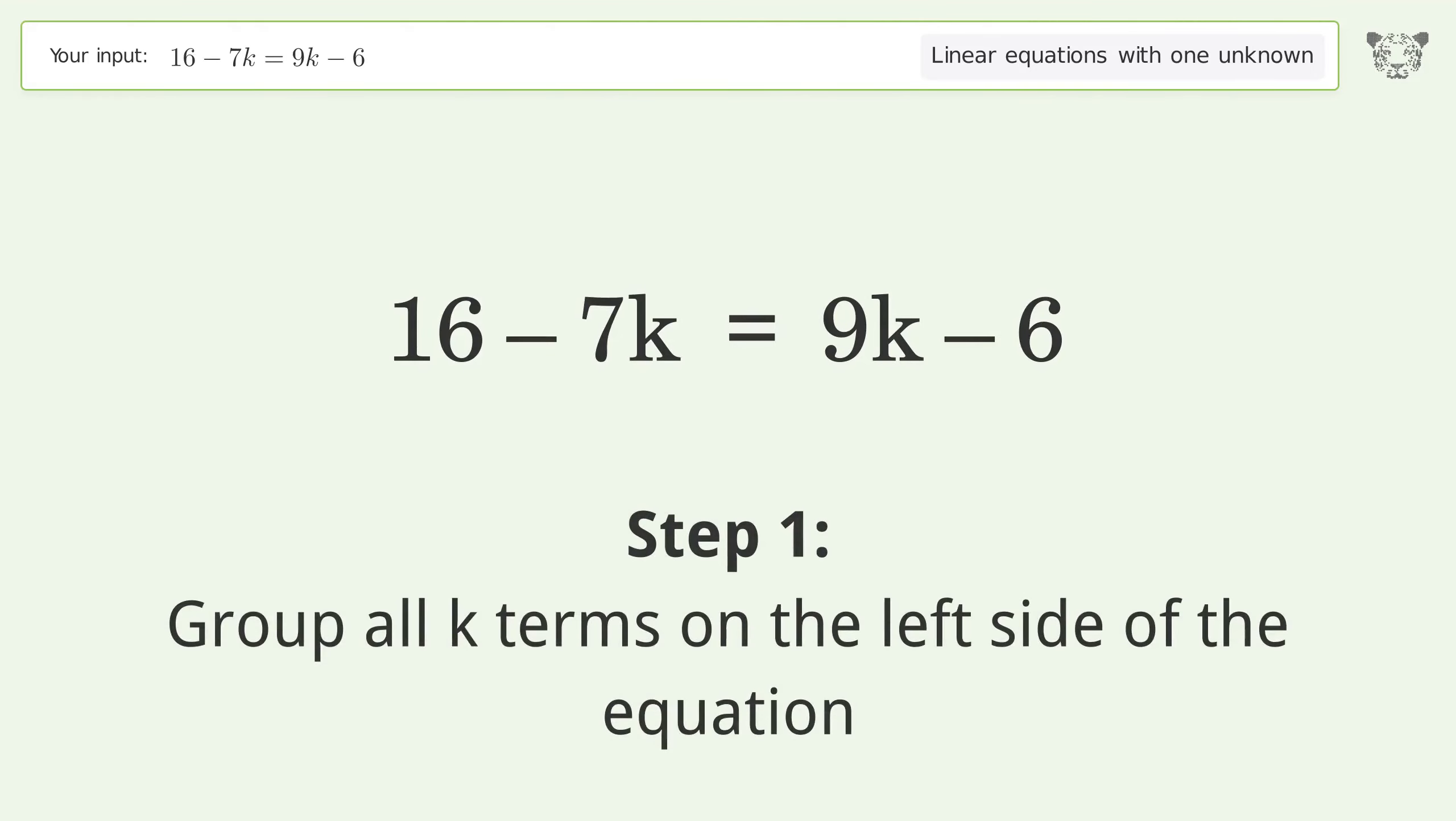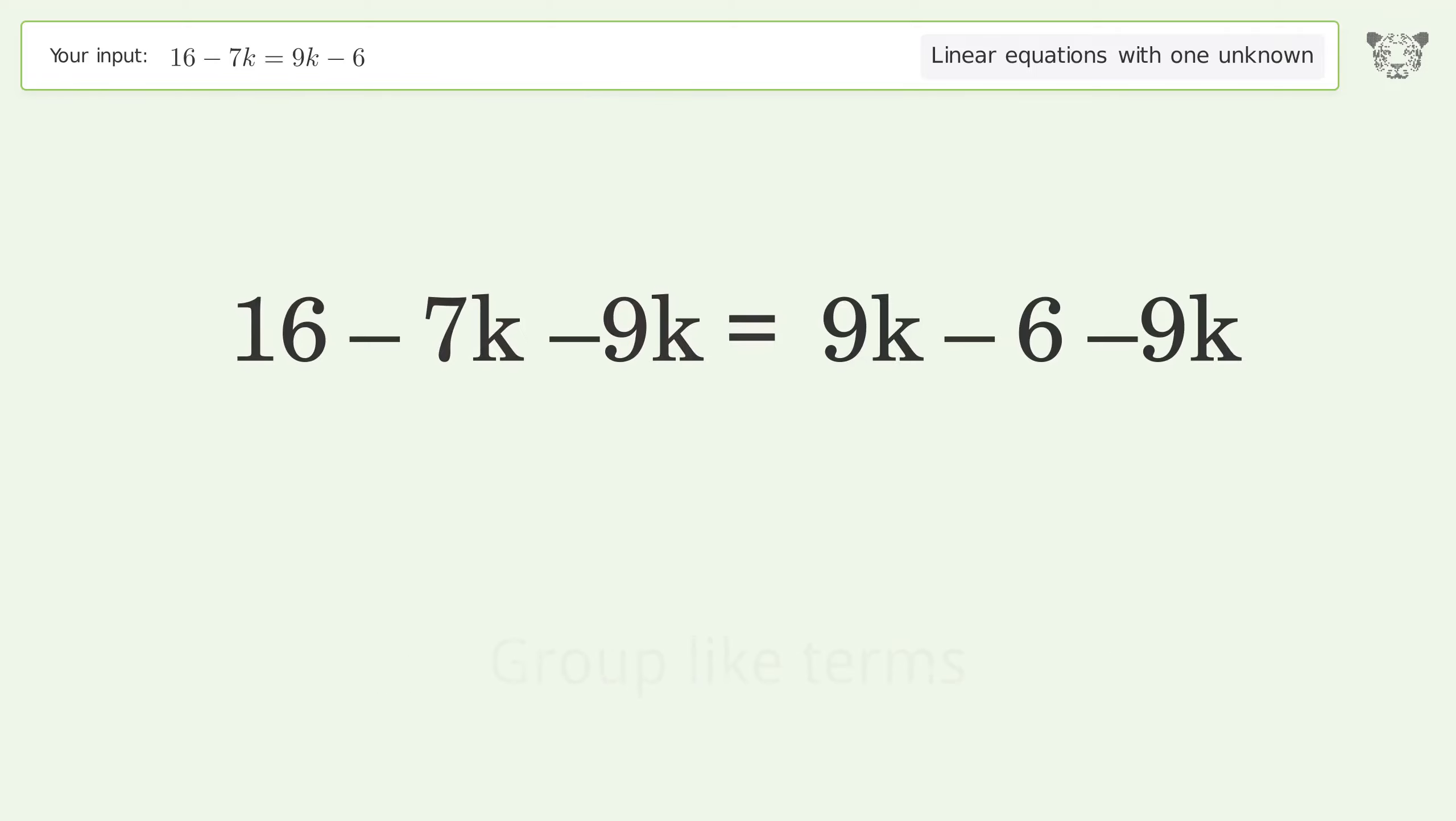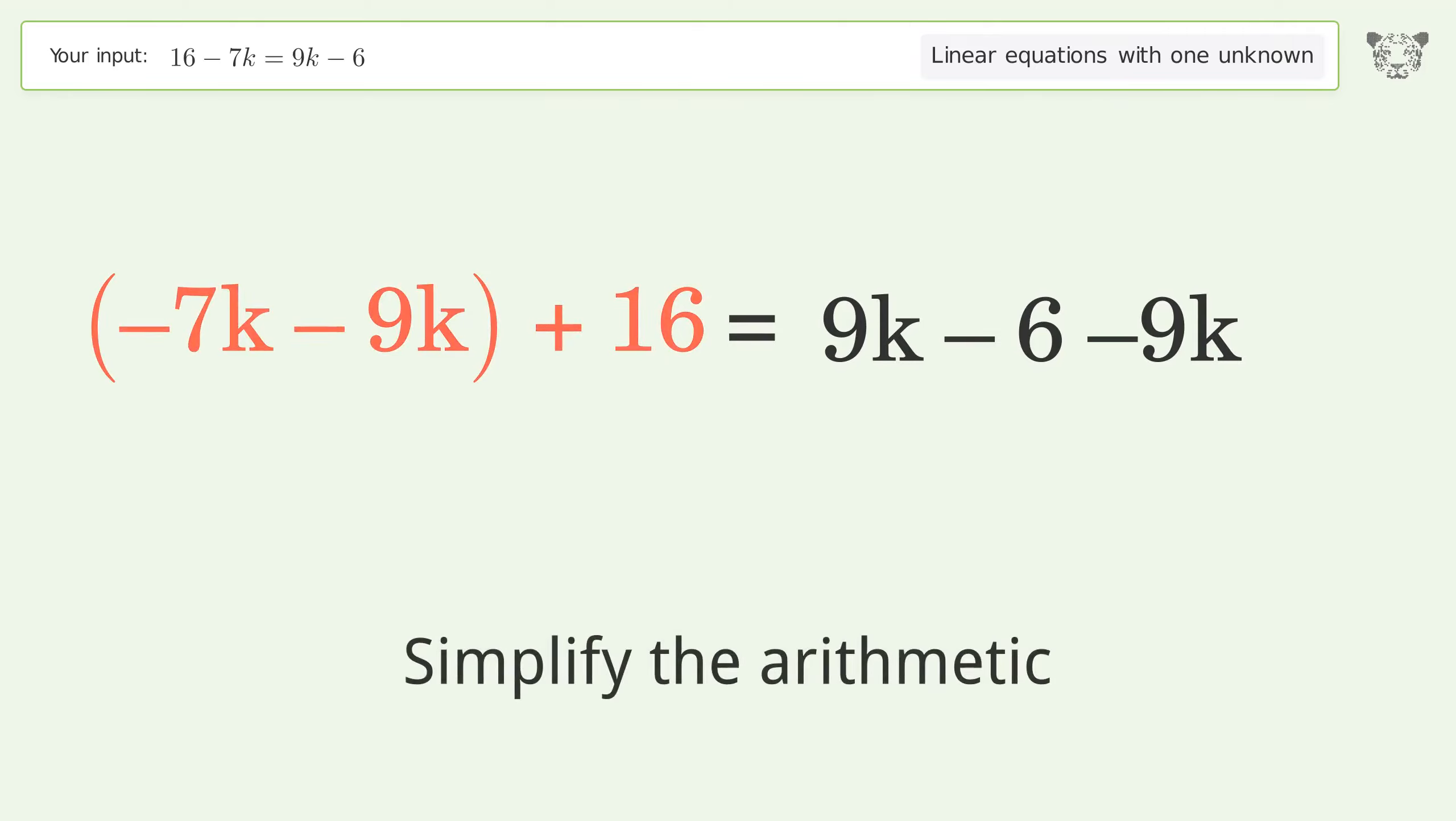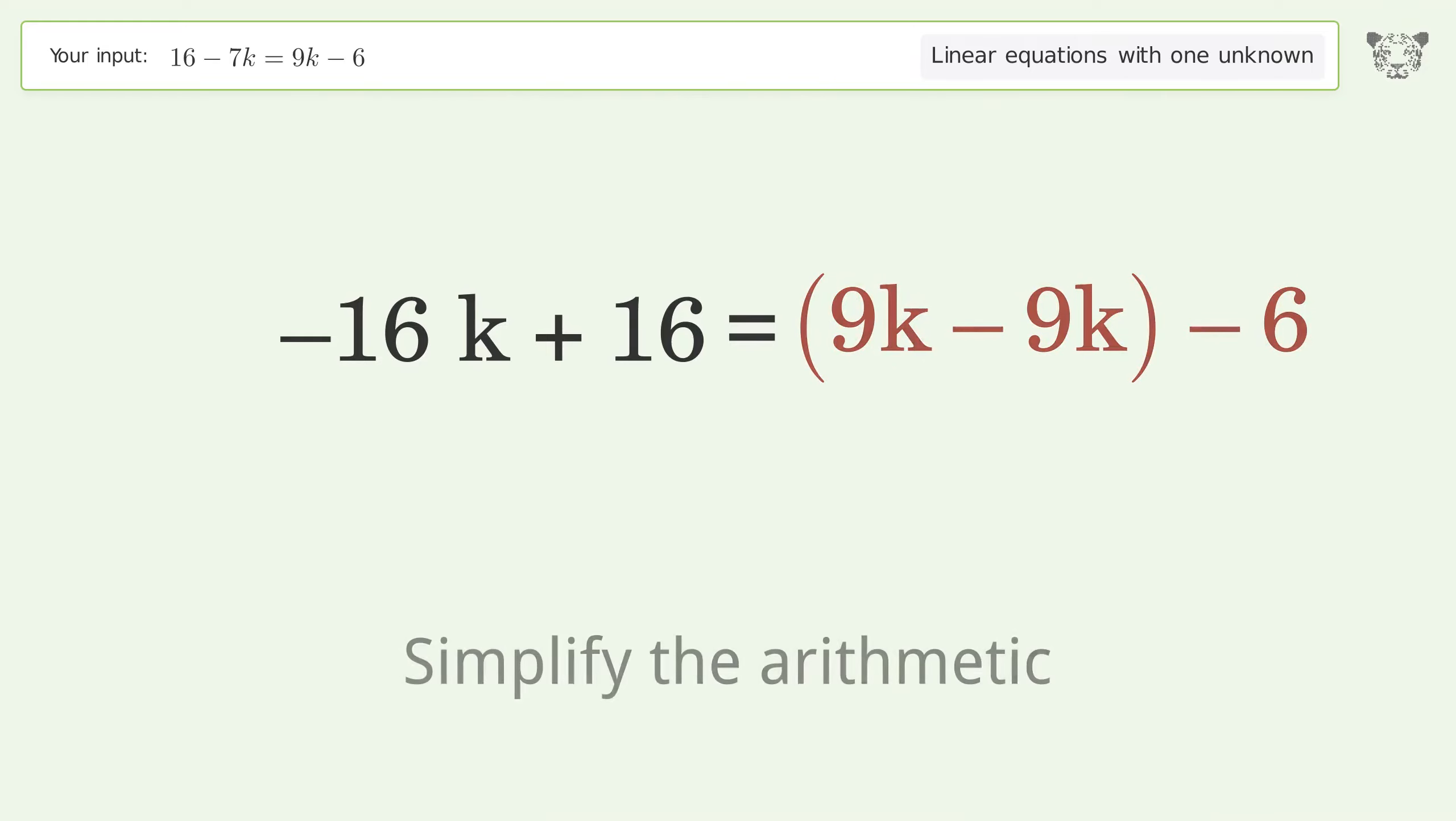Group all k terms on the left side of the equation. Subtract 9k from both sides. Group like terms and simplify the arithmetic.